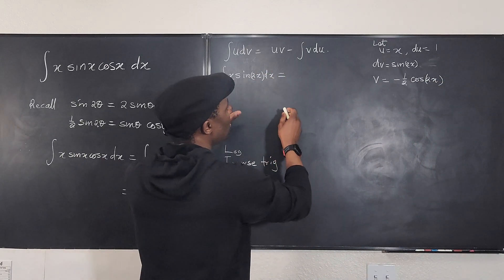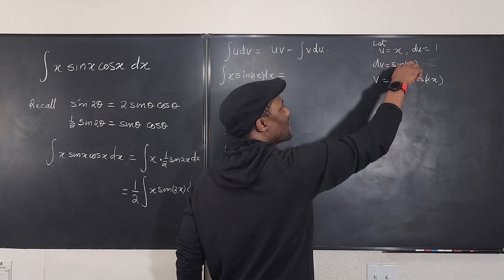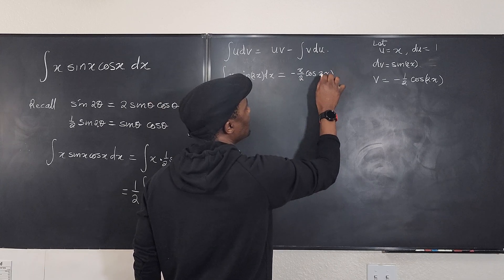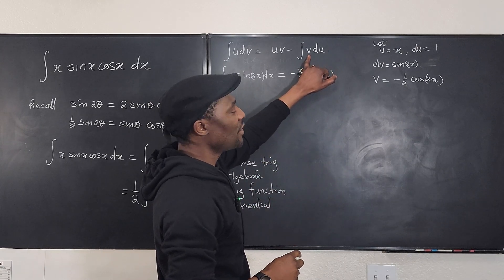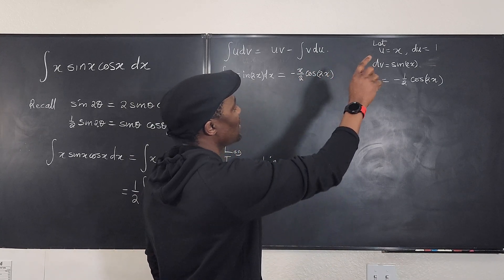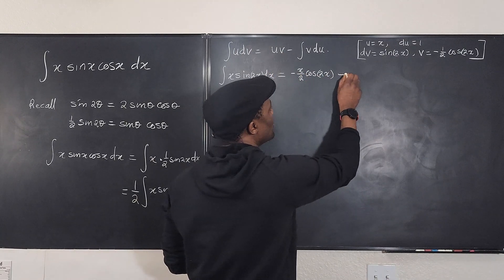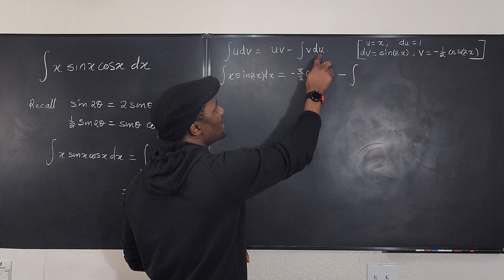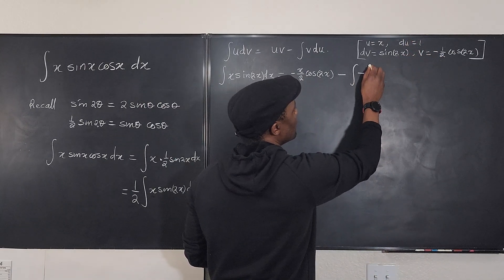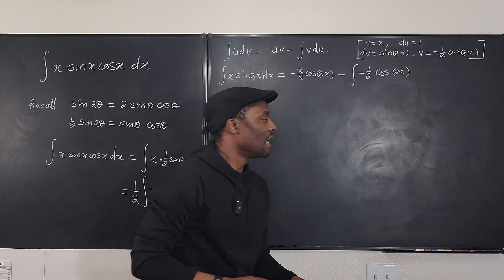Now we apply the formula. uv gives us x times −(1/2)·cos(2x) = −x/2 · cos(2x). Then we subtract the integral of v·du, which is the integral of −(1/2)·cos(2x) dx.